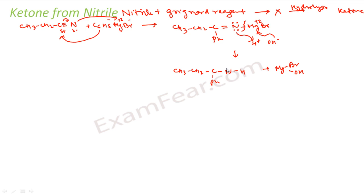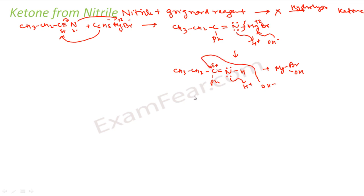Again we do more hydrolysis — more H+ and OH− comes into the system. H+ is again attracted to nitrogen's lone pair. Nitrogen is more electronegative than carbon, so carbon develops a slight positive charge. Since carbon has a slight positive charge, OH− is attracted towards this carbon. The double bond breaks to give a single bond. Hydrogen attaches to nitrogen and OH attaches to carbon.